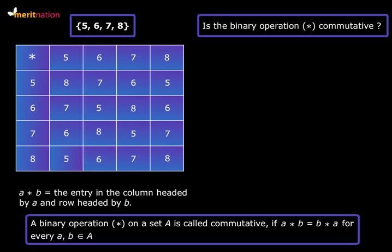So let's check the commutativity of star. And you see that 5 star 6, that is the entry in the column headed by 5 and the row headed by 6. Yes, we are talking about this element. So 5 star 6 equals 7.